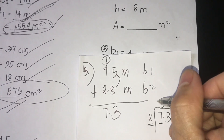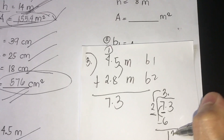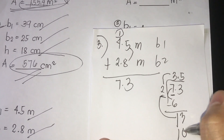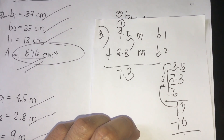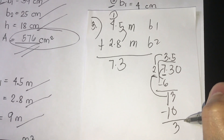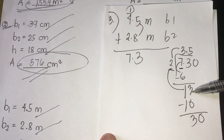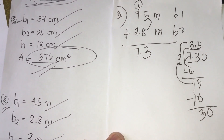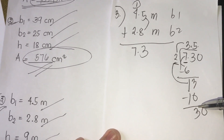We divide 7.3 by 2. Seven divided by 2 is 3, times 2 is 6, subtract gives 1. Bring down 3 to get 13, divided by 2 is 5, times 2 is 10, remainder 3. Continue bringing down to get the decimal portion — the division continues for the final answer of number three.